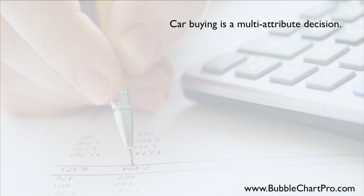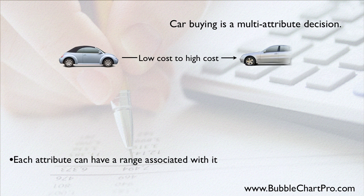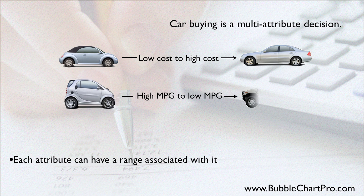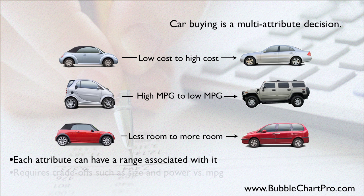So car buying requires a multi-attribute decision, and each attribute has a range of attractiveness associated with it. For example, low cost to high cost, high miles per gallon to low miles per gallon, and less room to more room. And these attributes require trade-offs. For example, a high powered car will probably have lower gas mileage than a lower powered car, and a smaller sports car will definitely have less room than a minivan. Because each one of these attributes has a range associated with it, and because, as a car buyer, you may have a preference on either side of these ranges, such as preferring lower cost to higher cost, we can express these preferences graphically.